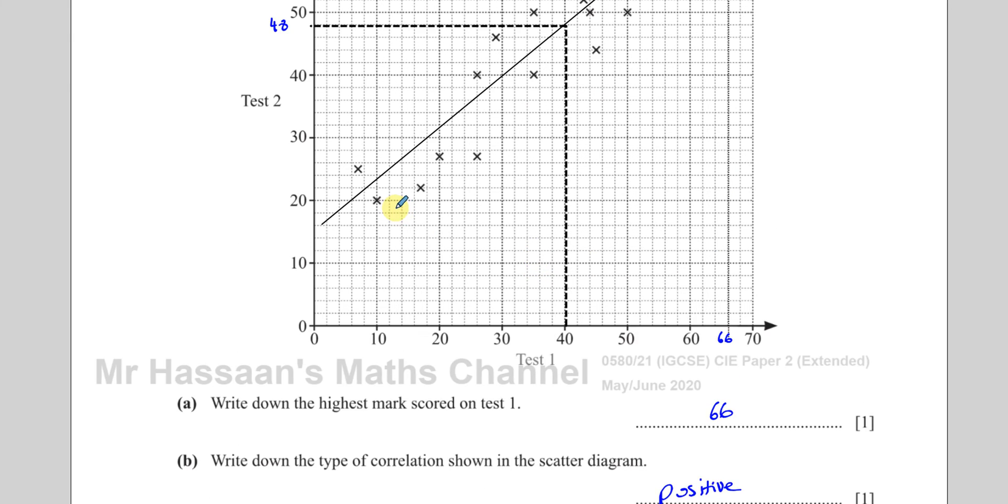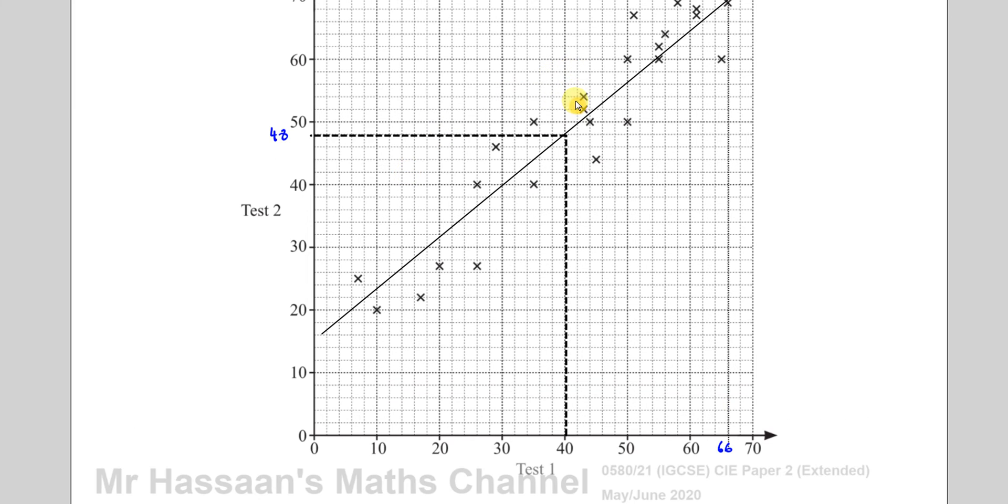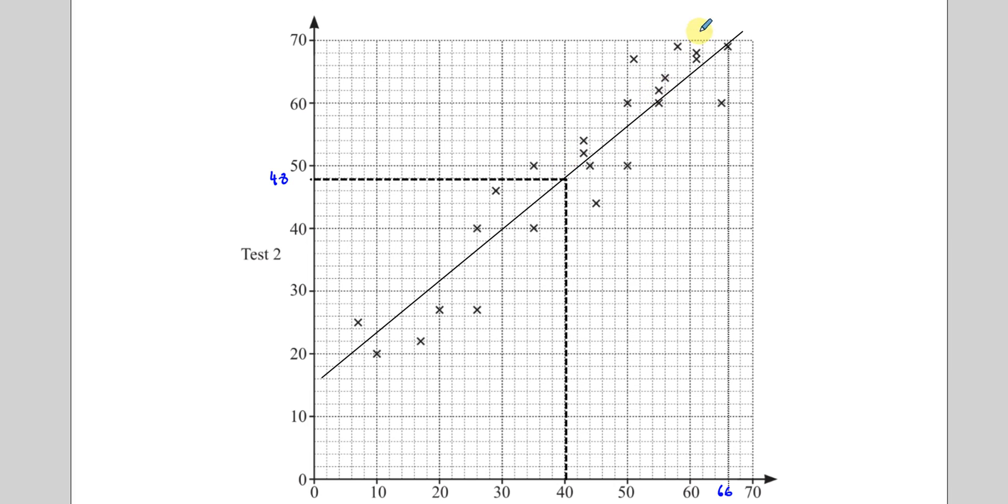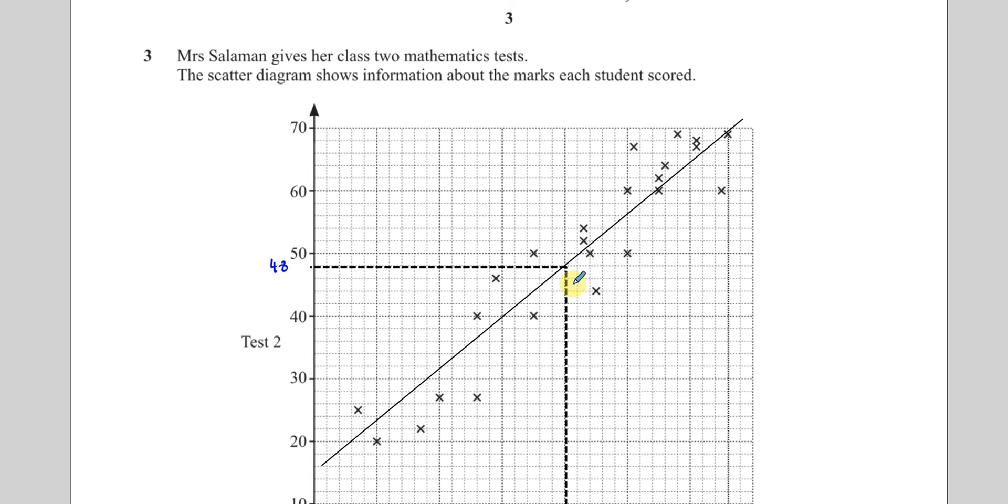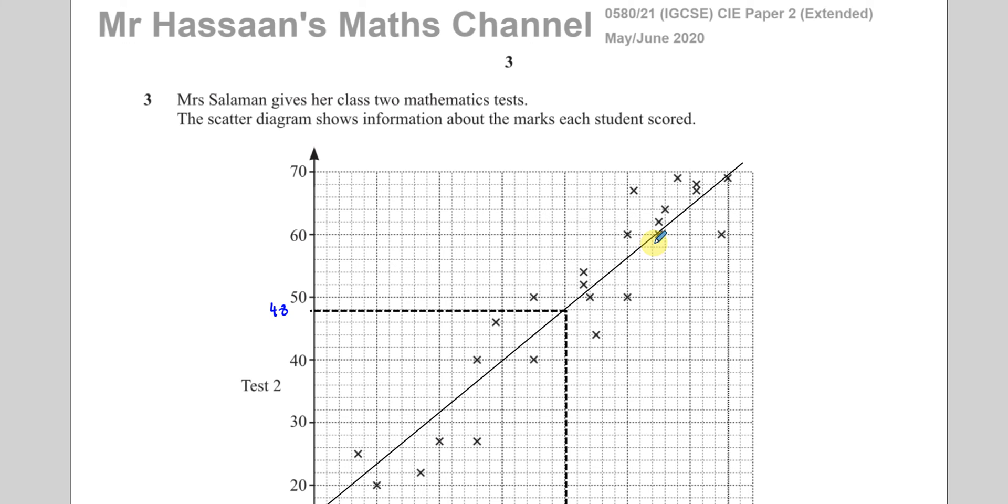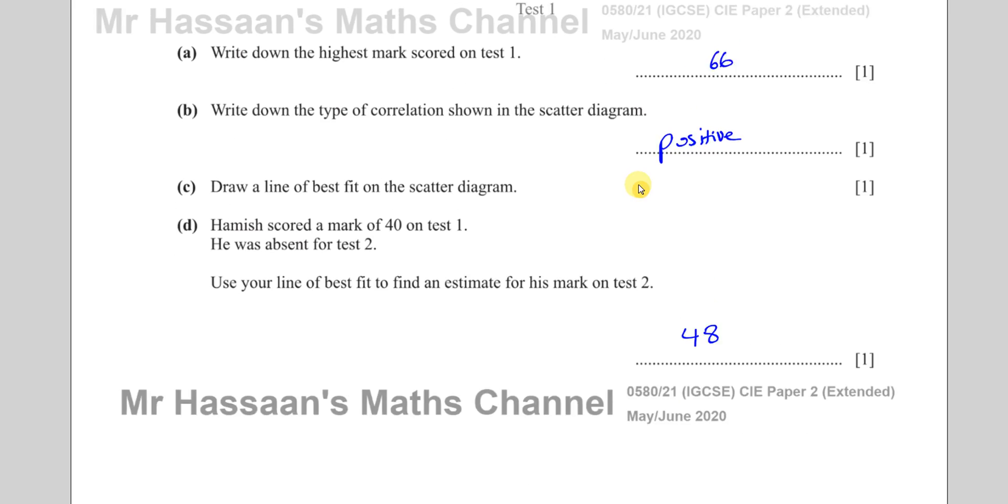That would be an estimate for his mark on test two. If your line of best fit was different from this slightly and you gave, for example, 46 or 50, then I'm sure they would accept that as well. If your line of best fit was, because I don't even know if my line of best fit is a perfect one. When you're doing it just by looking at it, of course, it's not going to be perfect. But they're not looking for perfection. So if you've got 46 or 50 because your line actually went through those points, that should be absolutely fine as well.